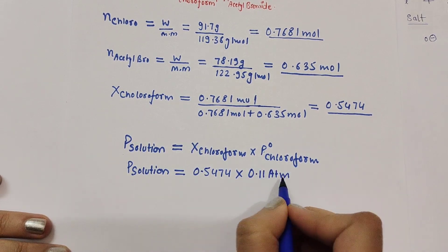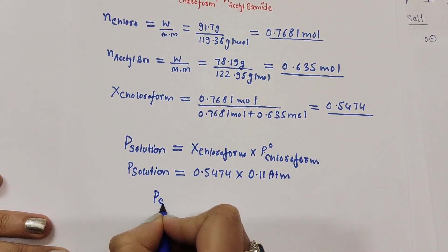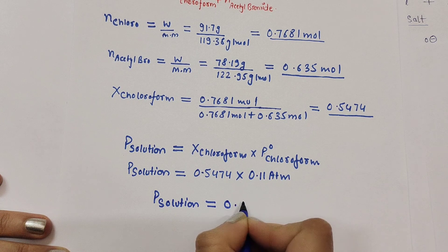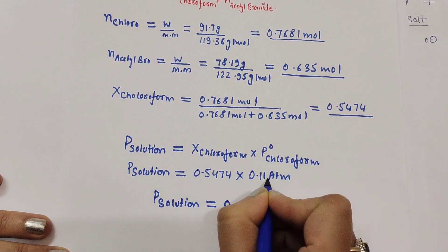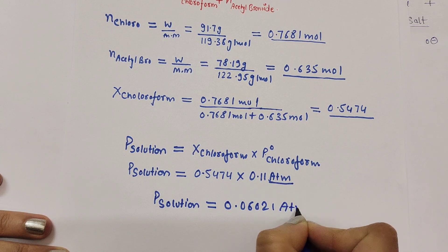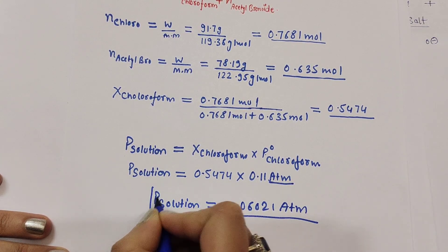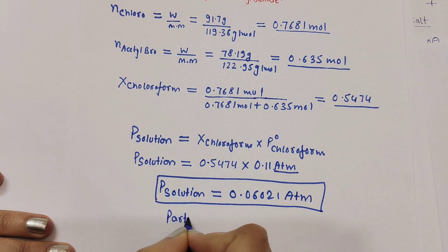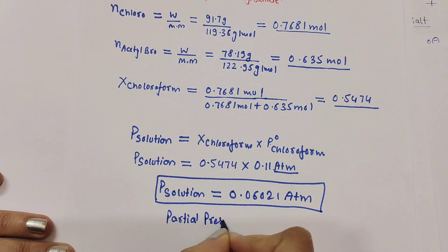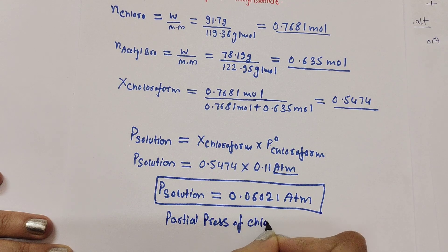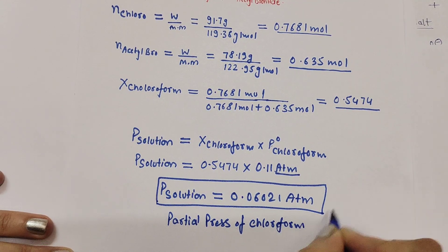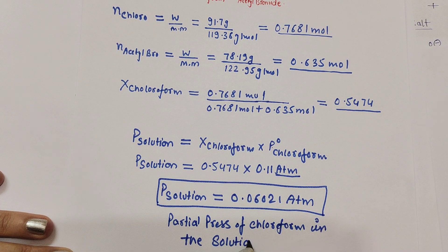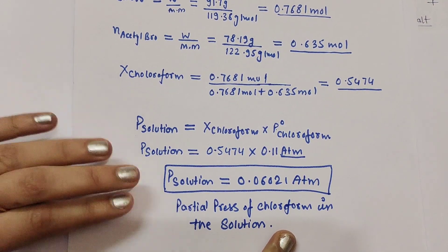The mole fraction is unitless, and the units of pressure are given as atm. Calculating: the partial pressure of chloroform in the solution comes out to be 0.06021 atm. This is the partial pressure of chloroform above the solution.